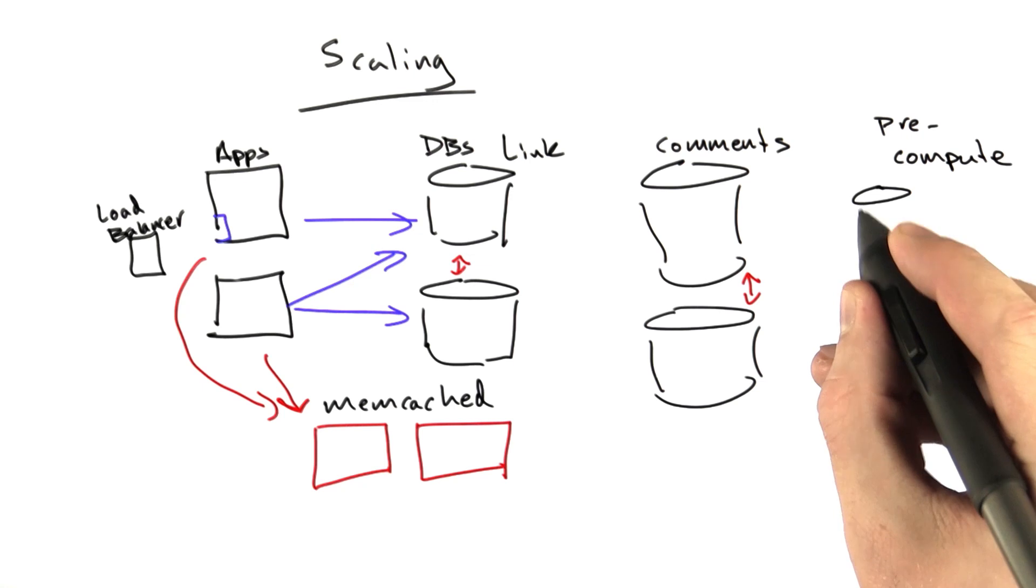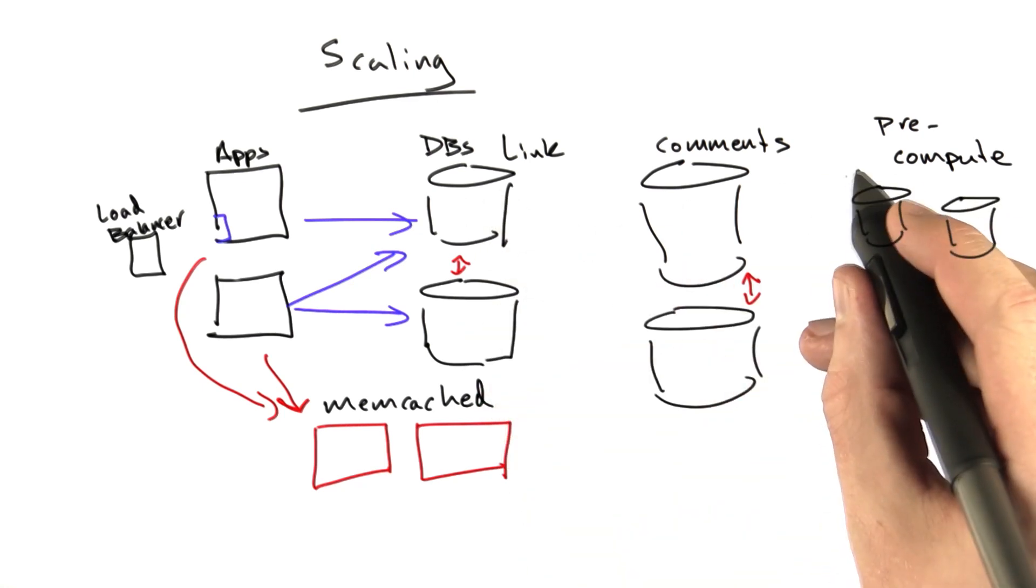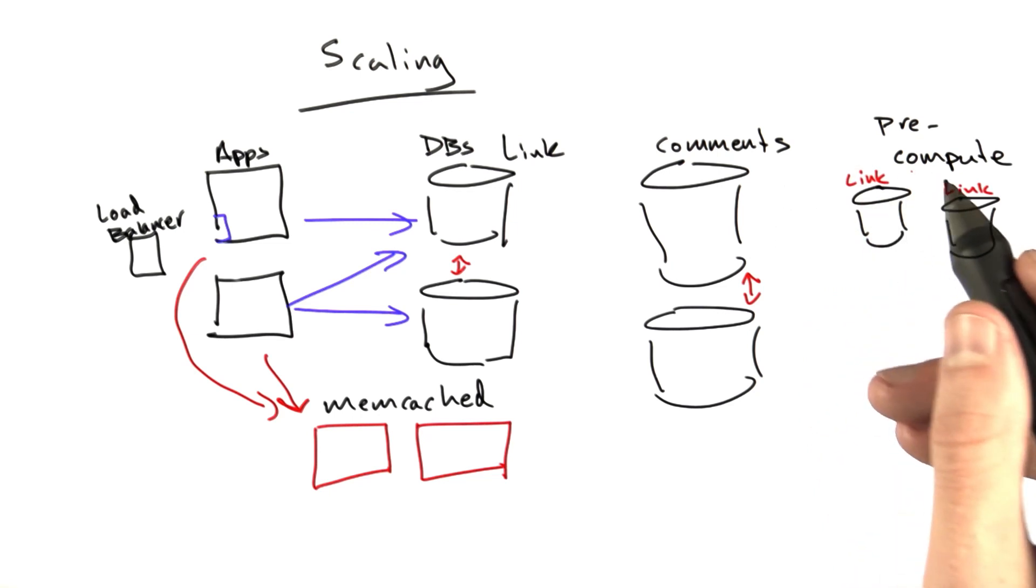The way we did that is we had this whole other database stack. These were replicas of the link database basically, more link databases. They could lag a little bit, it wasn't a big deal.